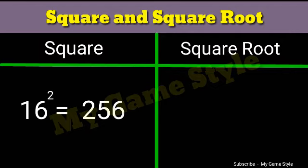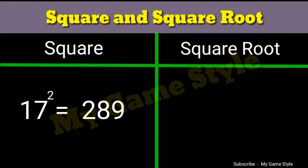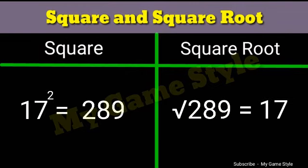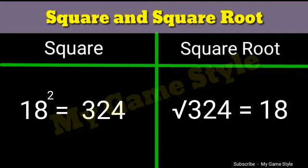Sixteen square is equals to 256. Square root 256 is equals to 16. Seventeen square is equals to 289. Square root 289 is equals to 17. Eighteen square is equals to 324. Square root 324 is equals to 18.